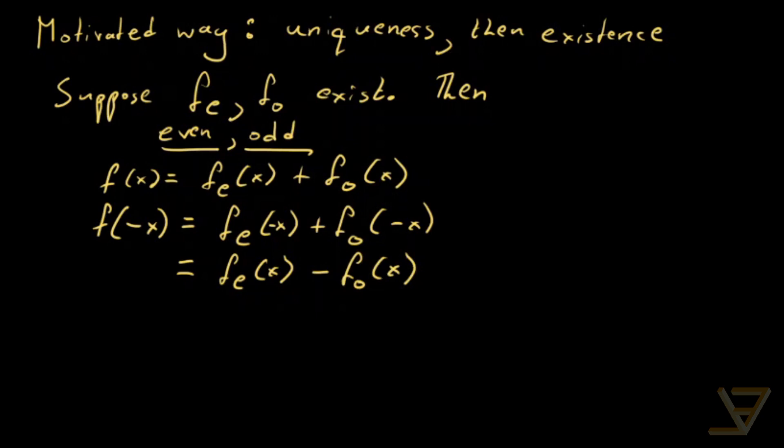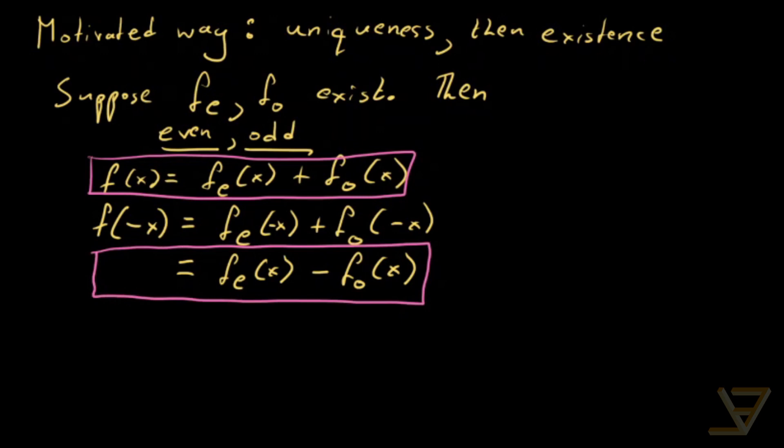Okay, so we've got a couple of equations here. We've got this one and we've got this one. And what you might notice is that we can solve for f_e and f_o of x each. So what we'll do is we'll call this one and we'll call this two and we'll add them and subtract them.